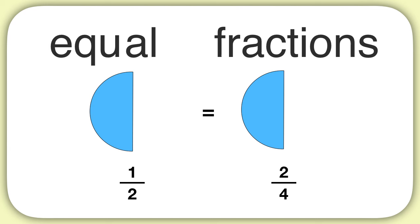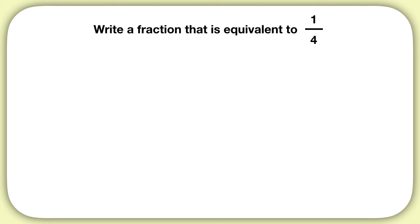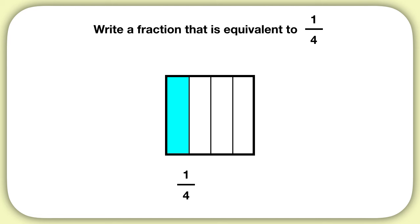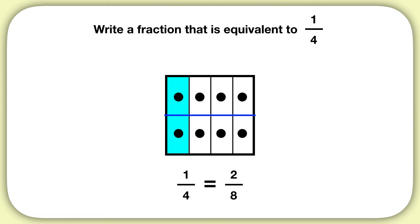Now that we know what equivalent fractions are, let's say you're asked to write a fraction that is equivalent to one-fourth. You should start by drawing out a model that shows one-fourth. Drawing a rectangle or a square is easiest. Then to make an equivalent fraction, you just need to draw a line that splits your fraction into two equal sections. Because I haven't changed the amount that's shaded, this fraction is equal or equivalent. Now I would write it as two pieces out of a total of eight — one-fourth is equal to two-eighths.